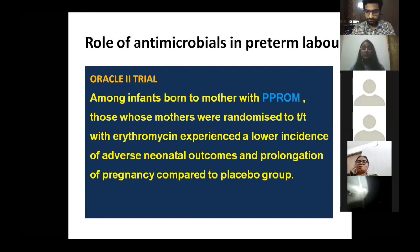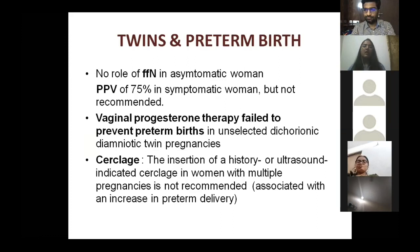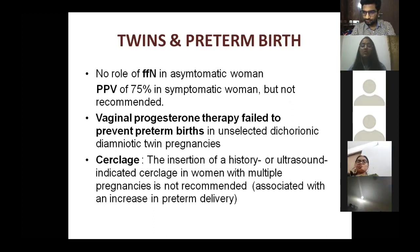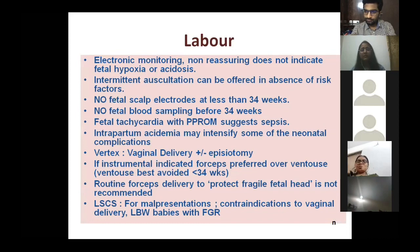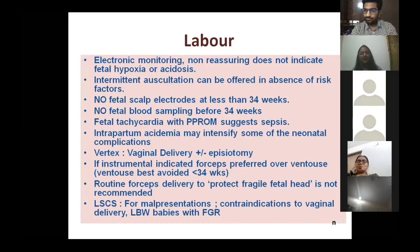Antimicrobials overall have no role in preterm labor; their significant role is only in PPROM, where they reduce neonatal morbidity and mortality. In twin pregnancies, fetal fibronectin has no role, vaginal progesterone has no role, and cerclage should not be done just because the pregnancy is twins. Electronic fetal monitoring is recommended during labor in twins, but before 28 weeks, the NST is not very predictive, so intermittent auscultation is acceptable in the absence of risk factors. No scalp fetal electrodes should be used.